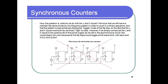Now the question is: what do we do with J and K inputs? We still have to maintain the same divide-by-two frequency pattern in order to count in a binary sequence. This pattern is best achieved using the toggle mode of the flip-flop, so J and K inputs must both be high at times.